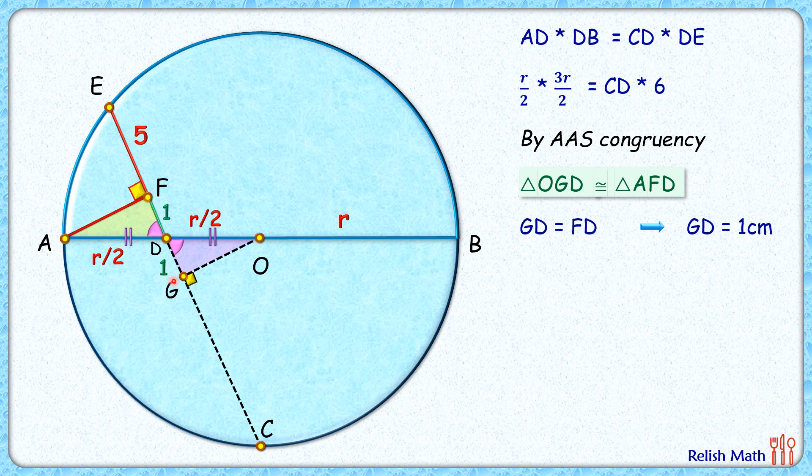Now we'll use the second theorem also: that is, in a circle, if we drop a perpendicular from the center, then that perpendicular bisects the chord. That means G is the midpoint of chord EC, or GC length will be same as EG length, which will be 5 plus 1 plus 1, or 7 centimeters. Now we have our CD length: CD is 7 plus 1, or 8 centimeters.